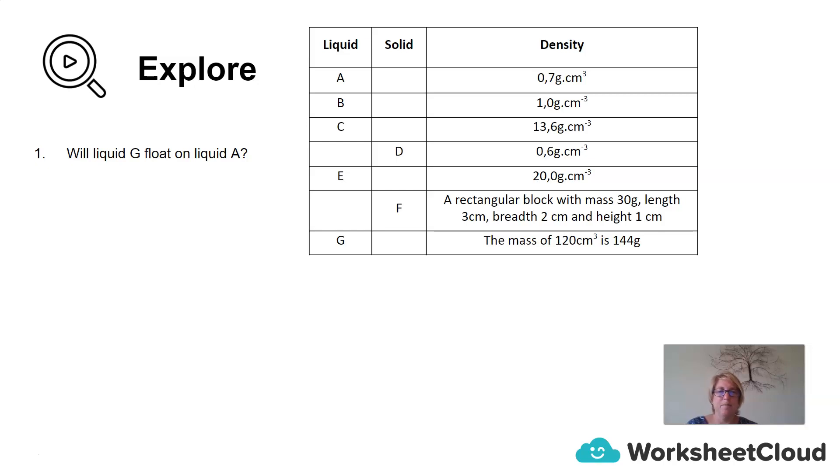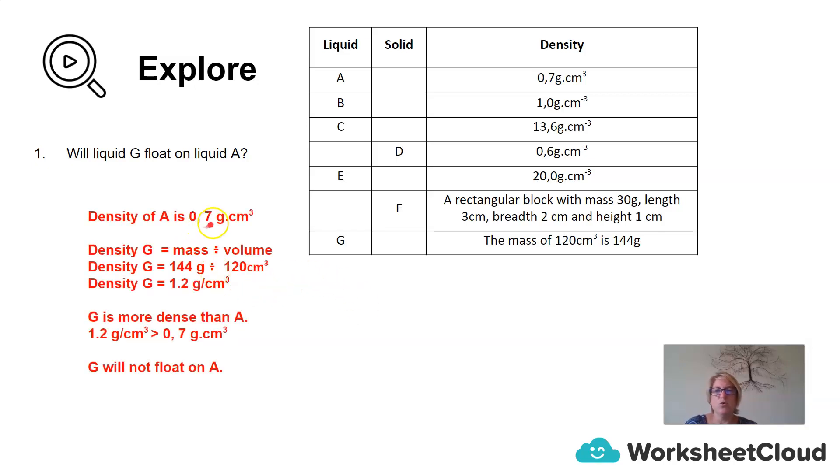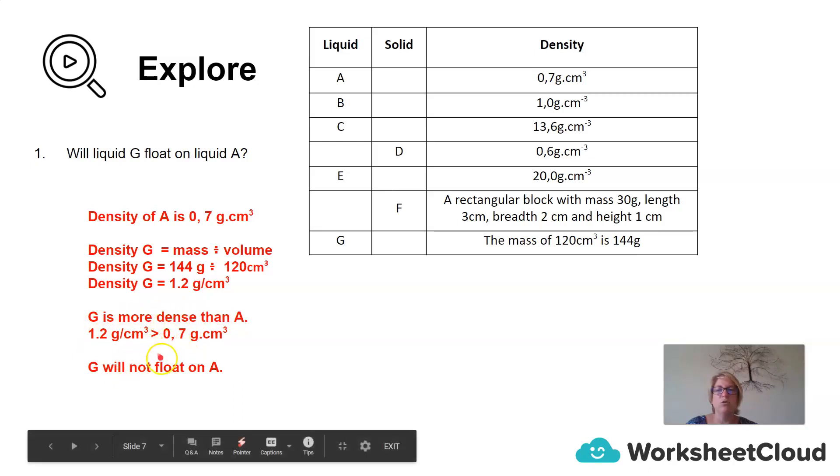So will G float on A? The density of A is 0.7 grams per centimeters cubed. I took that directly from the information we were given. For G, we need to calculate the density. In order to do that, we're going to say the density of G is the mass of G divided by the volume of G. Here is the mass of G, which is 144 grams. And here is the volume of G, which is 120 centimeters cubed. If we say 144 divided by 120, we get 1.2 grams per cubic centimeters. Therefore, G is more dense than A, because the density of G is 1.2, whereas the density of A is 0.7. So G will not float on A.